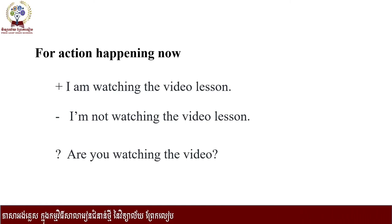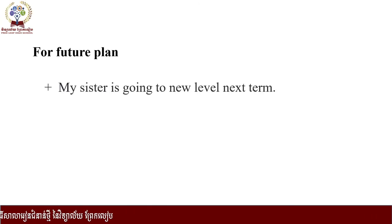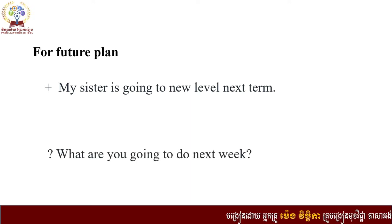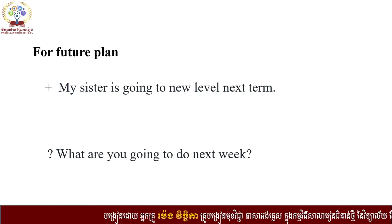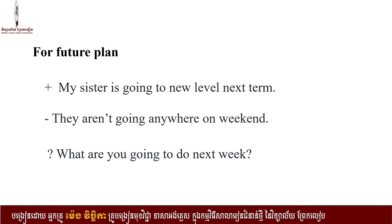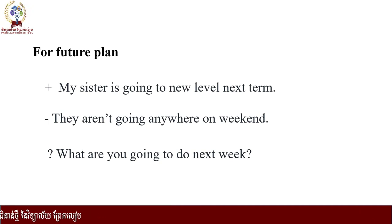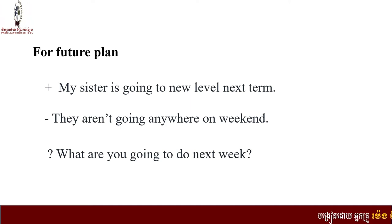For present continuous used for future plans, we can say: 'My sister is going to a new level next term' — that is something happening in the future. A question example: 'What are you going to do next week?' And a negative: 'They aren't going anywhere else.' All of these sentences are about future plans using present continuous.